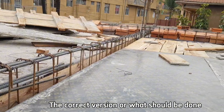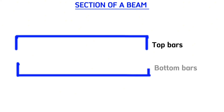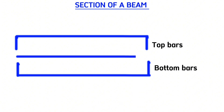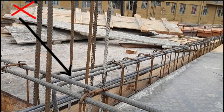The correct version is providing the development length for bottom bars and top bars. For middle bars, you can just fix them in the middle. This one on the left is wrong and this one on the right is correct.